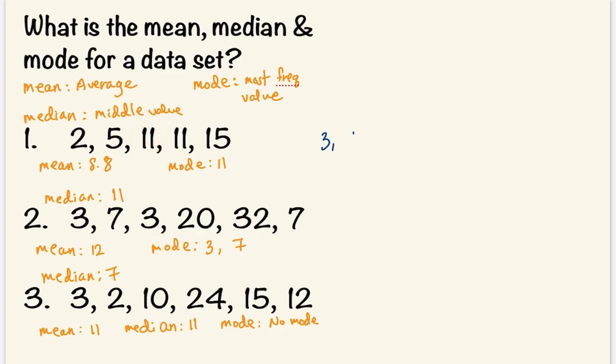In the case where there are an even number of values, like this one, there will be 2 middle values. And to find the median, you need to take the average of the 2 middle values.